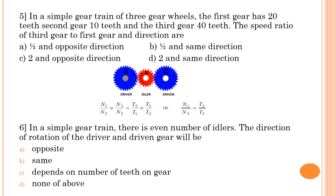Velocities are not given but teeth are, so: T3/T1 = 40/20 = 2. The velocity ratio is 2. For direction: if the first gear rotates anticlockwise, due to the single idler gear (odd number), the last gear also rotates in the same direction. Therefore option D is correct — velocity ratio is 2 and direction of rotation is same.